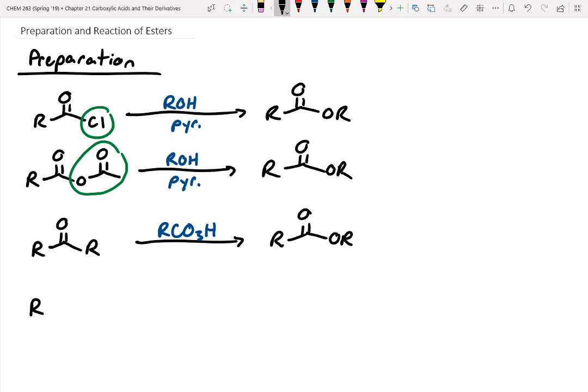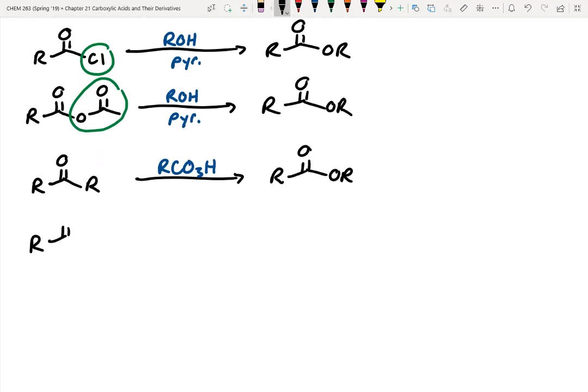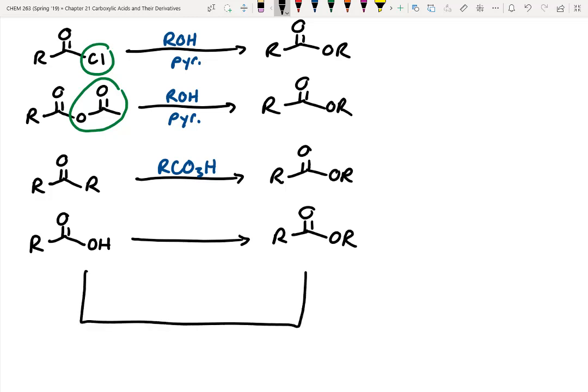We can also have a carboxylic acid and convert it to an ester two different ways. One of them you did in lab — most of you made a carboxylic acid intermediate and at some point swapped it out for a methyl ester using methanol and acid. So potentially we could just have acid along with some sort of corresponding alcohol. This is called a Fischer esterification — we went through the mechanism already.